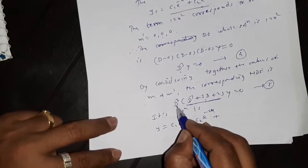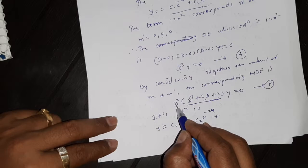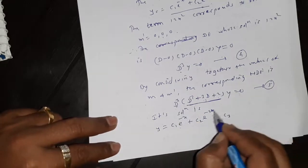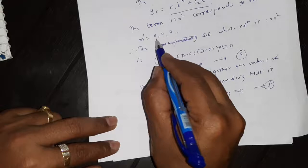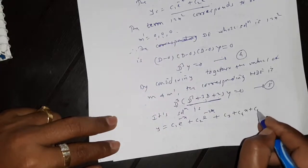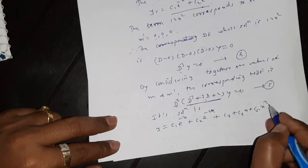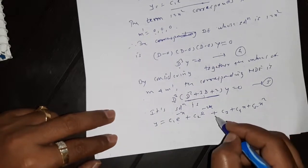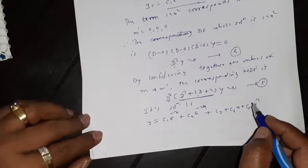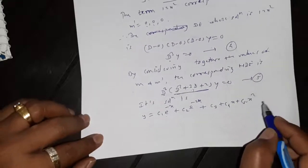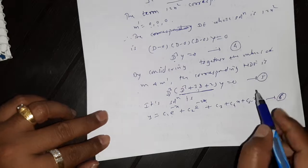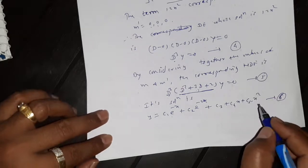The terms corresponding to d³ equal to 0, with roots 0, 0, 0, are c3 + c4·x + c5·x², multiplied by e^(0·x) which equals 1. So the full solution of equation 5 (equation 6) is: y equal to c1·e^(−x) + c2·e^(−2x) + c3 + c4·x + c5·x².